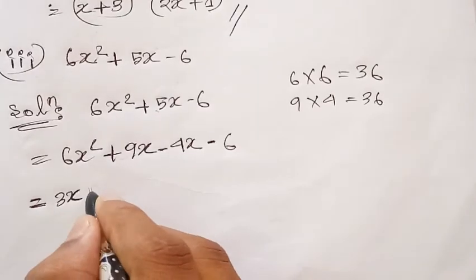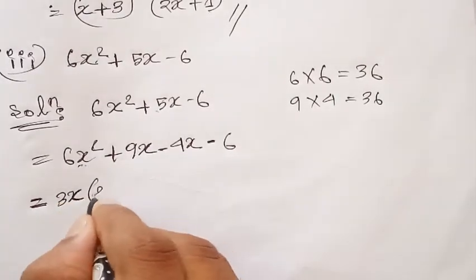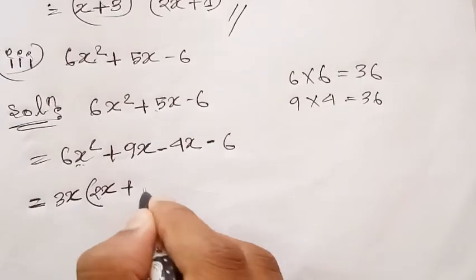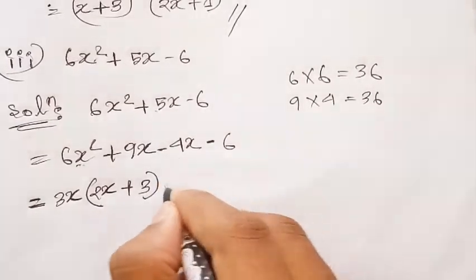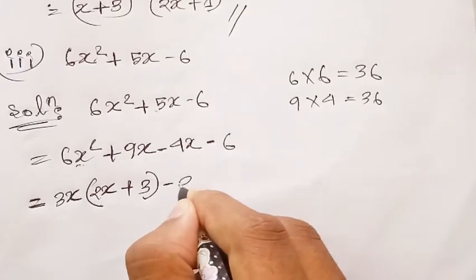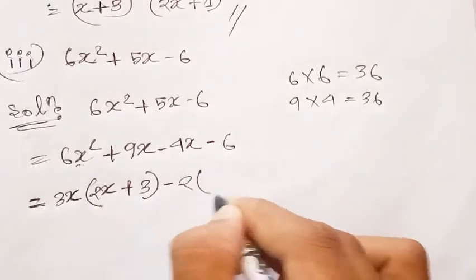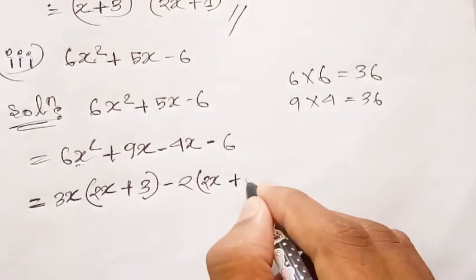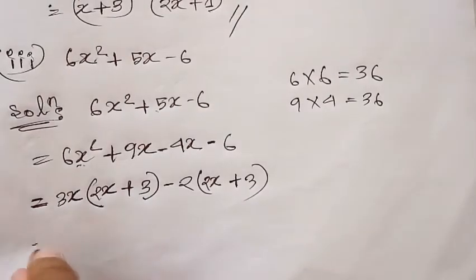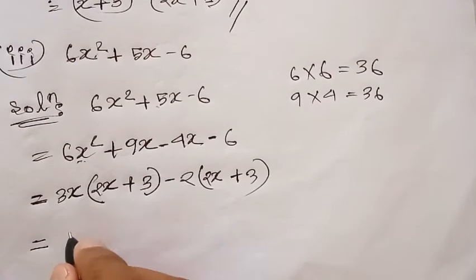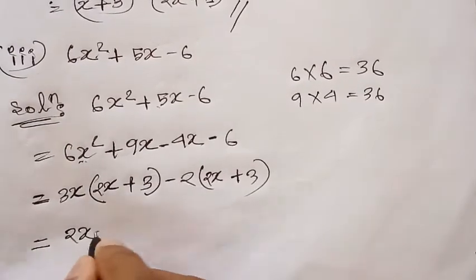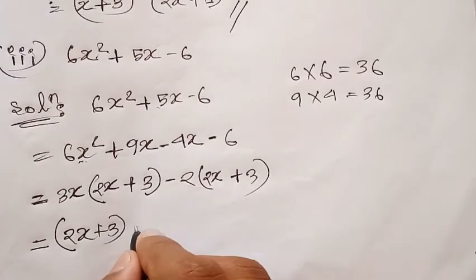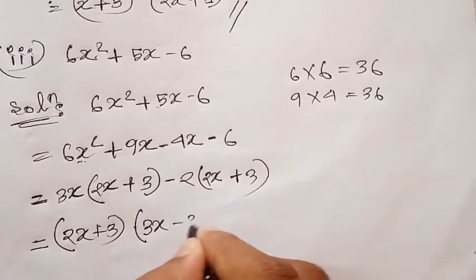6x square plus 9x — common factor is 3x, giving 2x plus 3. Then minus 4x minus 6 — take minus 2 common, giving 2x plus 3. So the factors are 3x minus 2 and 2x plus 3.